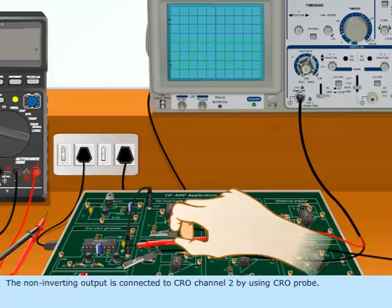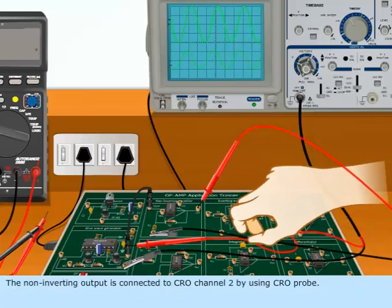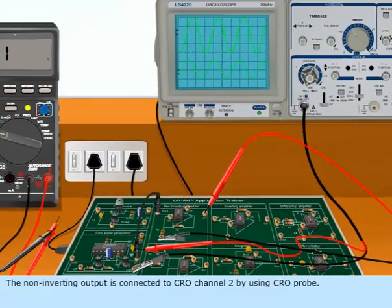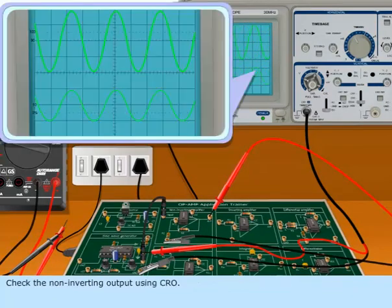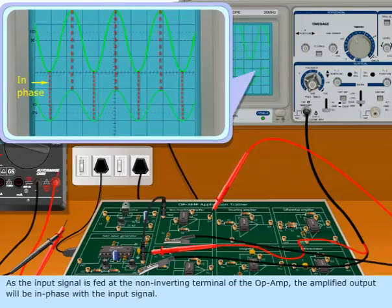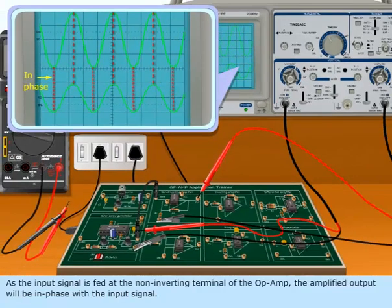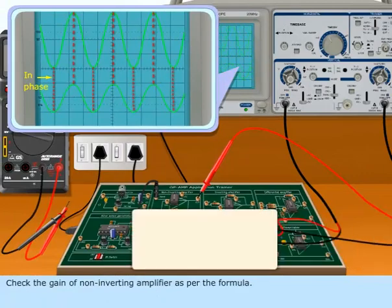The non-inverting output is connected to CRO channel 2 by using a CRO probe. Check the non-inverting output using CRO. As the input signal is fed at the non-inverting terminal of the Op Amp, the amplified output will be in phase with the input signal. Check the gain of the non-inverting amplifier as per the formula.